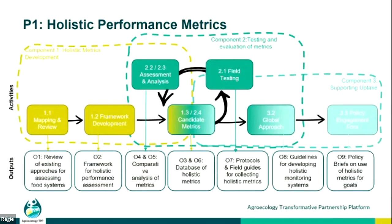P1 on holistic performance metrics is about performance assessment done in a very holistic manner, taking as much as possible all externalities of social and environmental dimensions into account. Agricultural and food systems are at the very centre of sustainable development. Agriculture is highly impacted by climate change, by biodiversity losses, and is a major cause of both of these global crises. At the same time, agricultural and food systems are at the centre of poverty, employment, sustainable consumption — you name it.